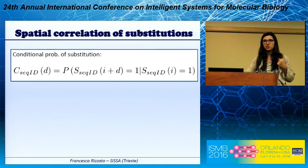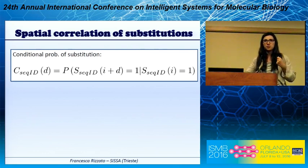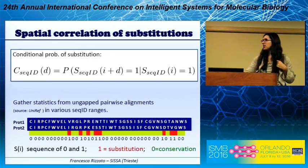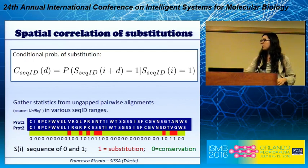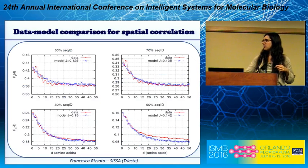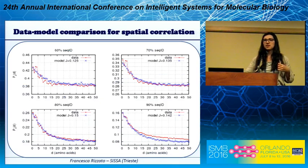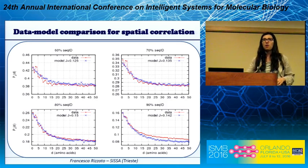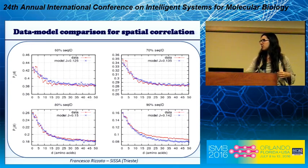We analyze three different quantities with this model. The first is the spatial correlation of substitutions along the chain, quantified as the conditional probability of substitution — the probability to find a substitution at a site given another one nearby. We gather statistics from ungapped pairwise alignments in UniRef, condense the information into sequences of zeros and ones, and plot this data in red against our model. For all analyzed sequence identities the agreement is very good, with only J optimized separately in each panel.